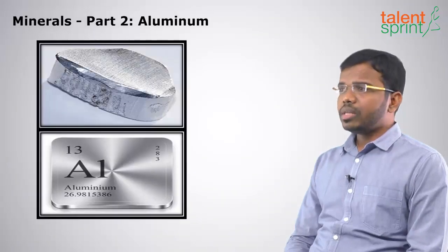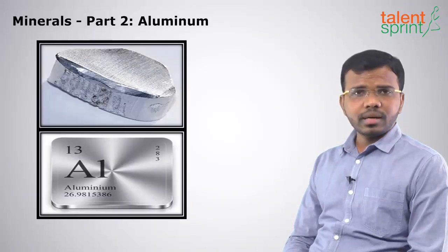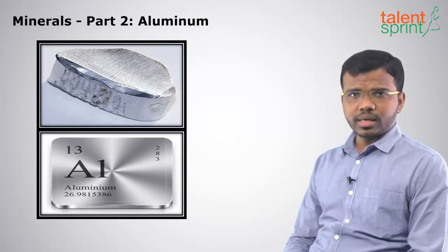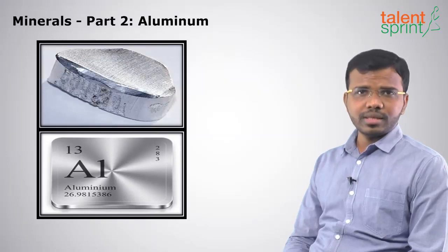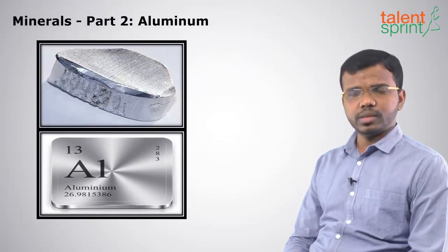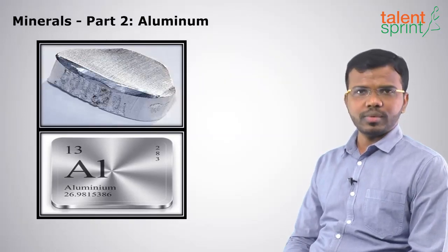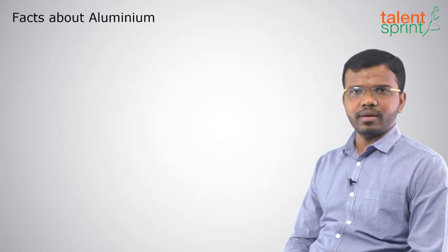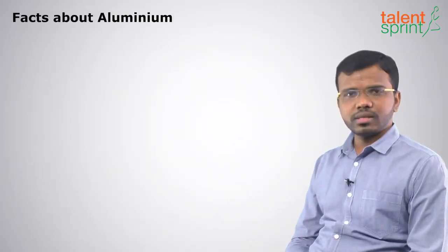Hello everyone, welcome to Talent Sprint and welcome to this topic called Aluminium. Aluminium has an atomic number 13 and its atomic mass is 26.9, approximately 27. Let's go to the facts about Aluminium first.